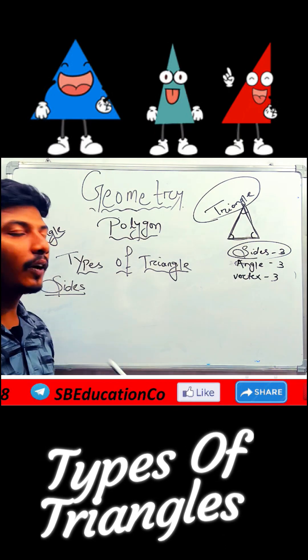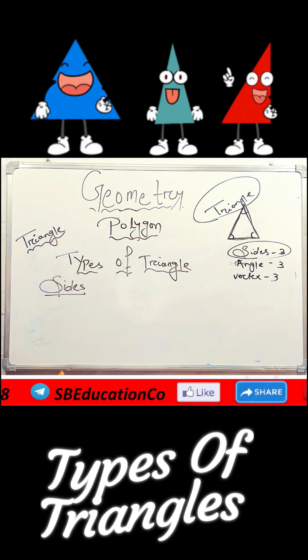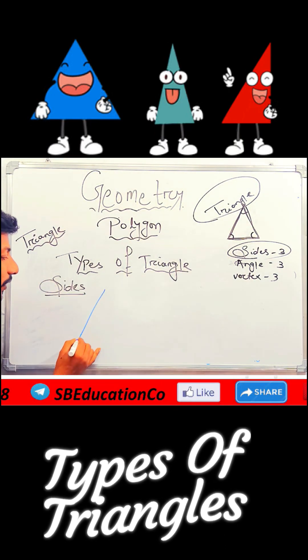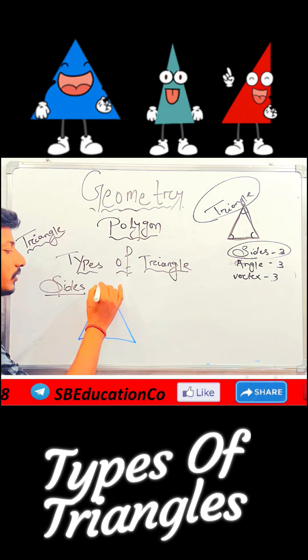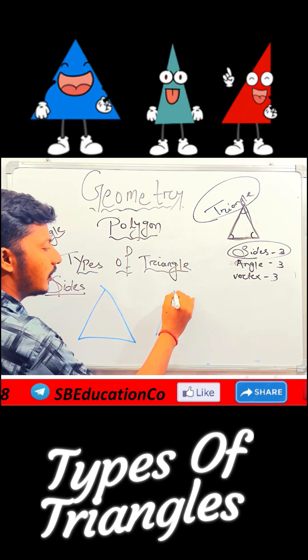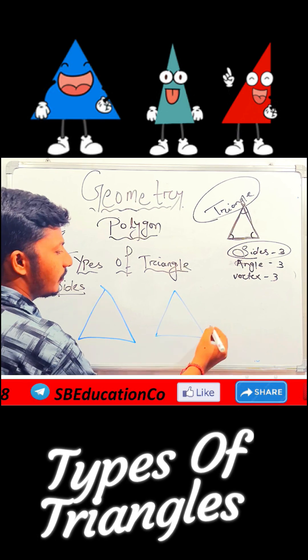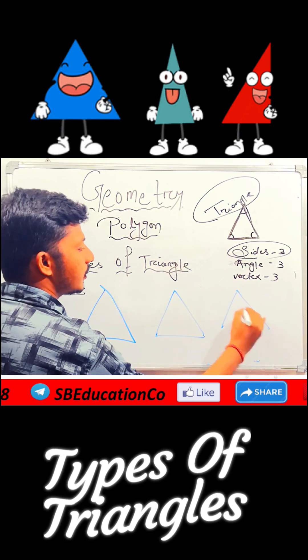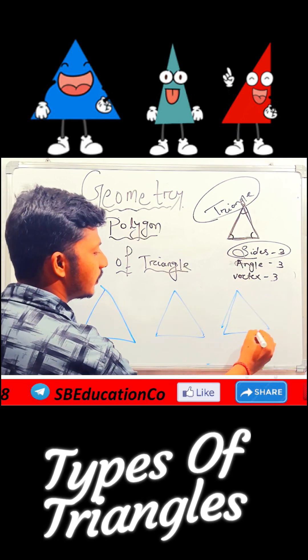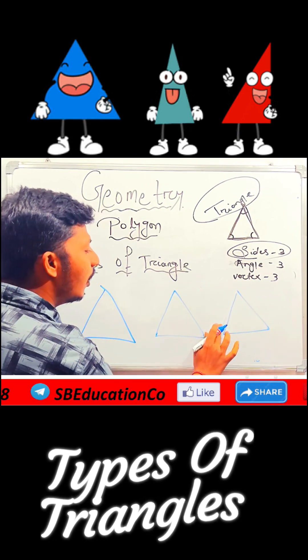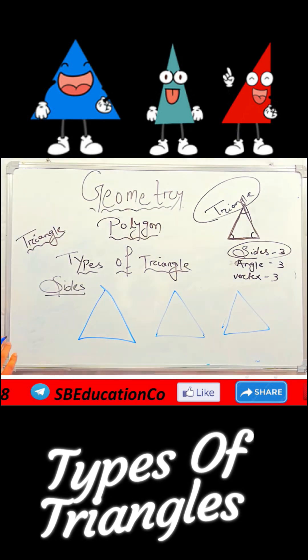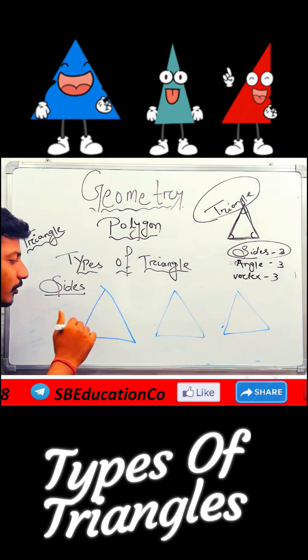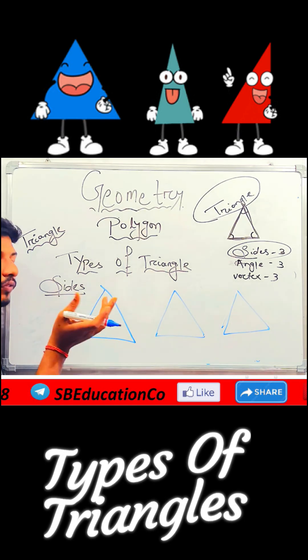Coming through the types of triangles according to their sides. Let's suppose I will draw first — triangles, three sides of triangles. Suppose these are the triangles. Now look at what I am telling you.